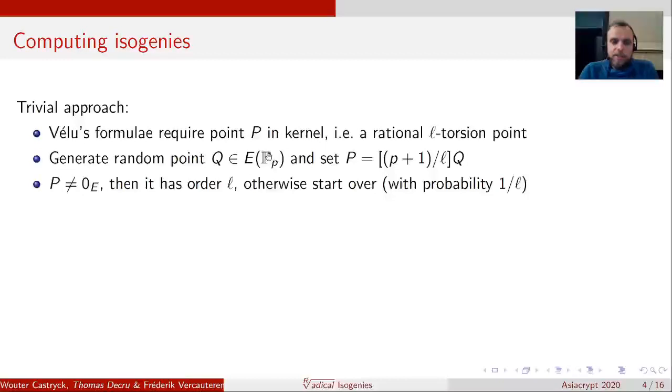The amount of points on this curve over F_p is P plus 1, which means if you take a random point, you do scalar multiplication with P plus 1, then you'll always end up at zero. So if you take a random point Q and you multiply it with P plus 1 over L, then you end up with a point P that when you multiply this by L, you end up at zero. So this is an L-torsion point. The only problem is you still have a probability of 1 over L that it's a trivial L-torsion point. In that case, you need to start over, because otherwise you have a trivial isogeny.